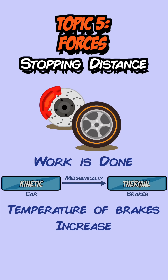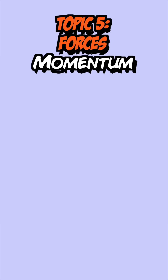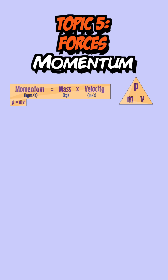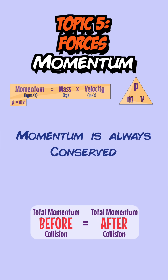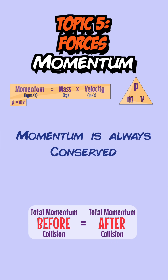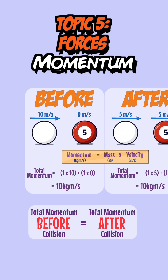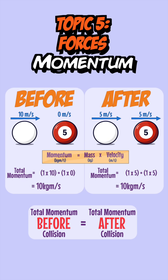Cars and any other moving object have momentum, calculated using the momentum equation. Momentum is always conserved, meaning the total momentum before any collision always equals the total momentum after.